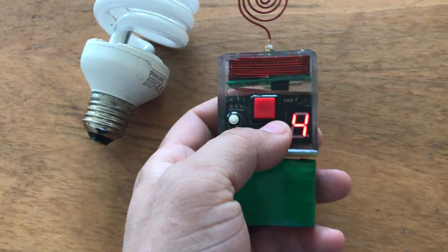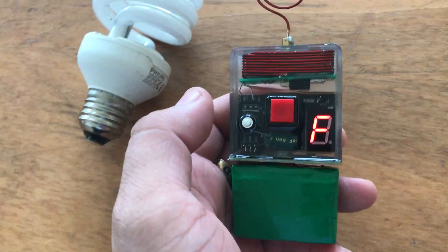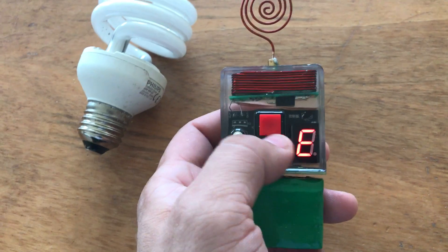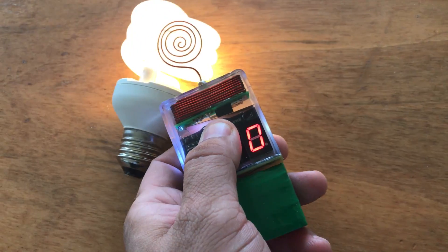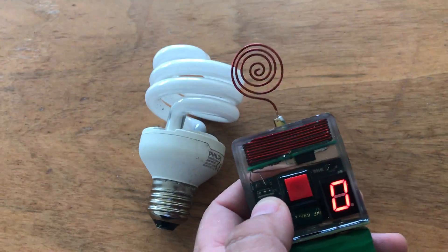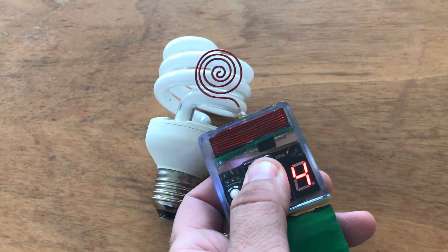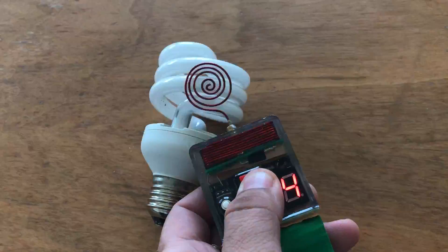You can select different numbers here on the display and it's actually just different pulse settings. So if I set it to zero, it's a constant, as you can see. And if you select one, two, three, four, it will just pulsate in different frequencies.